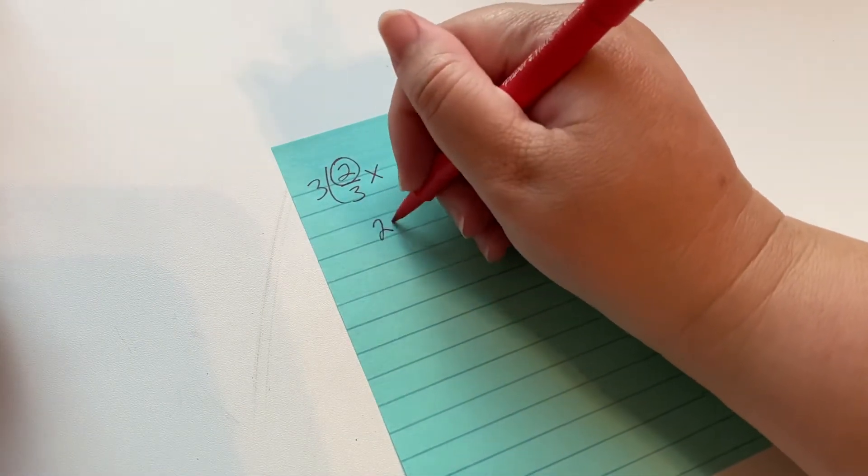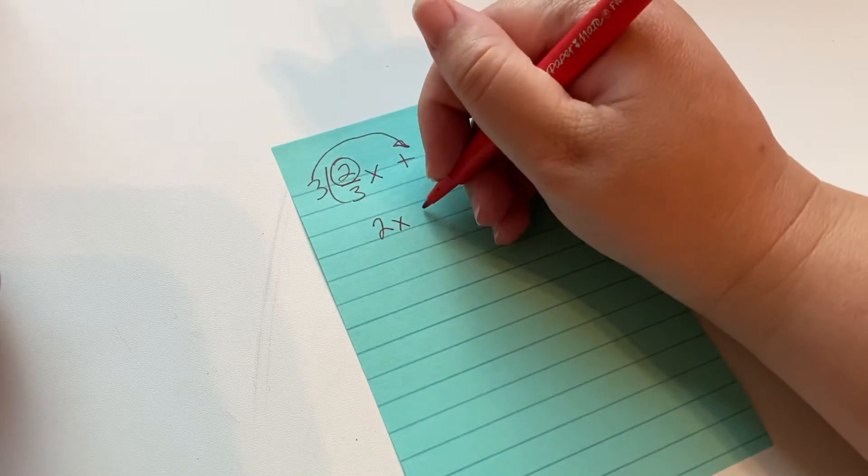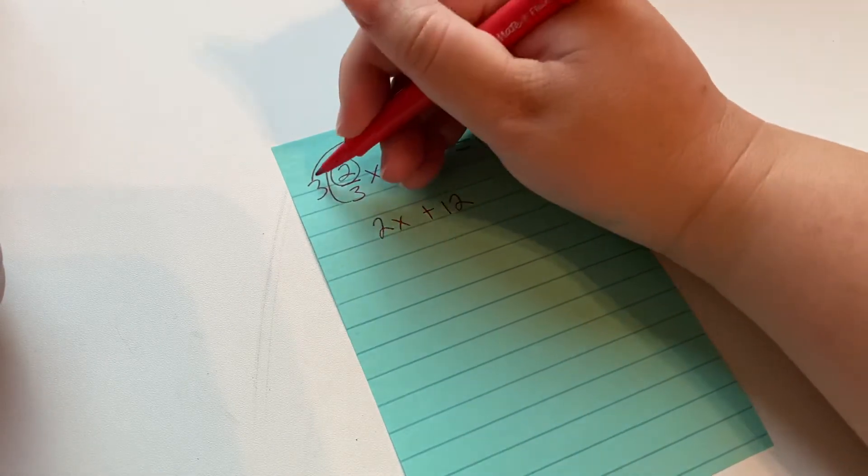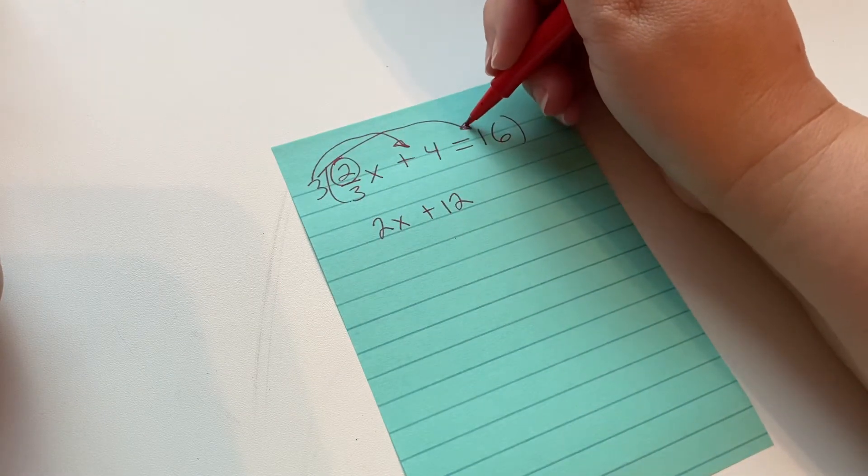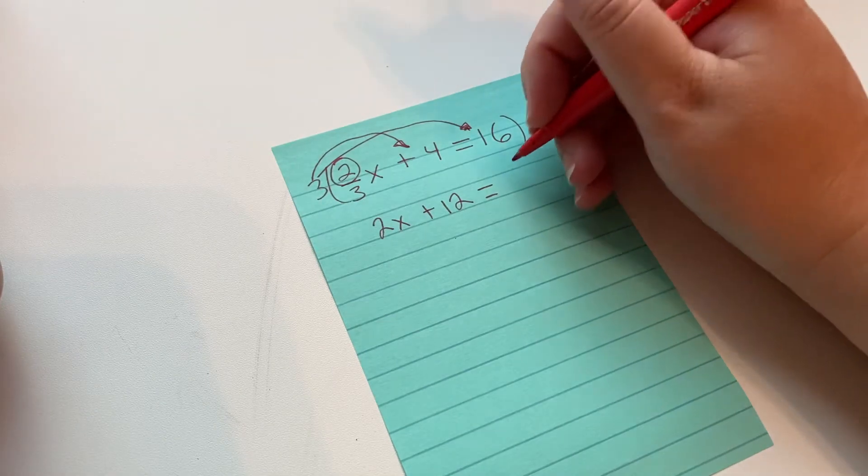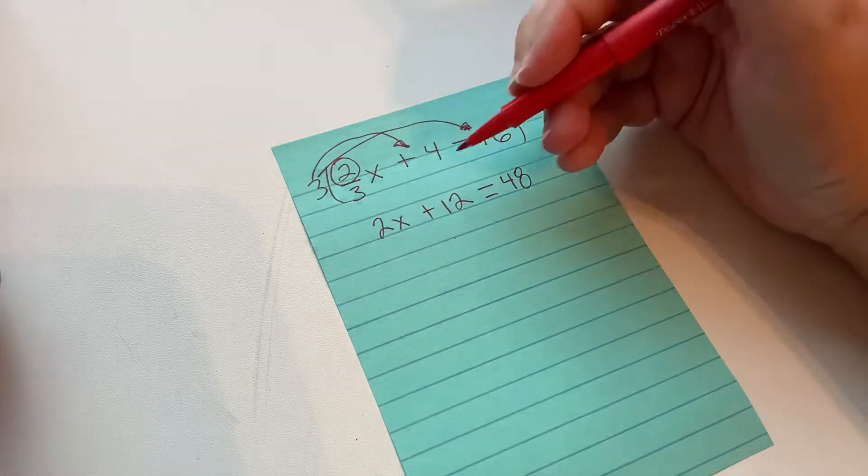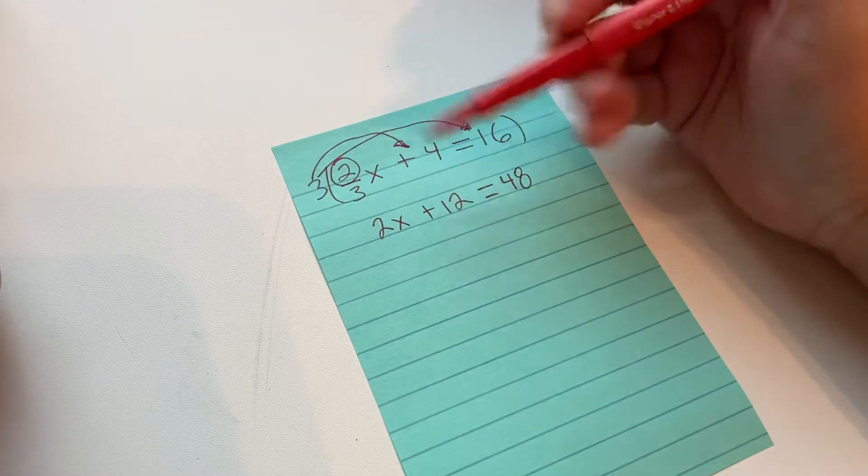Then we have to just to balance everything out we have to do 3 times 4 which is 12 and 3 times 16. So 3 times 16 is 48. And then the one that we need to eliminate next is this plus 12. So we subtract 12 from both sides.